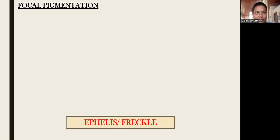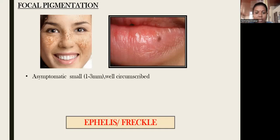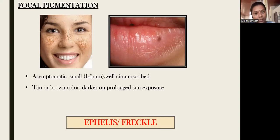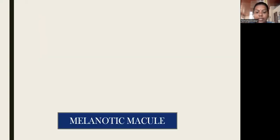The first localized lesion is ephelis or freckles. This is very common in white people and we also sometimes have ephelis or freckles. It is a common benign pigmentation; it is asymptomatic. They are usually small and well-circumscribed, tan or brown in color, darker with prolonged sun exposure. It is mostly developmental in origin and is due to increased melanin production.